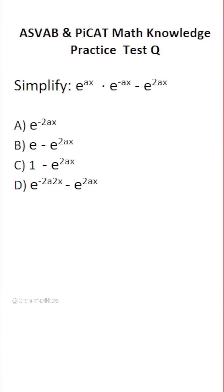This math knowledge practice test question for the ASVAB and PiCAT says simplify e to the ax times e to the negative ax minus e to the 2ax.